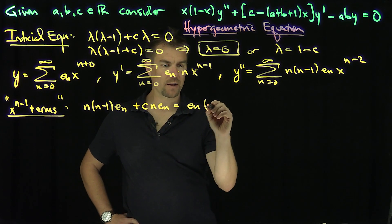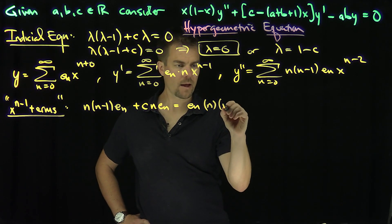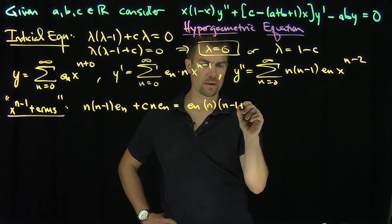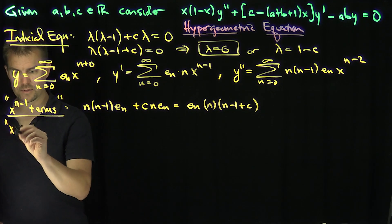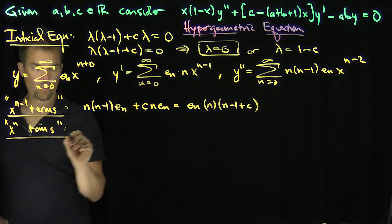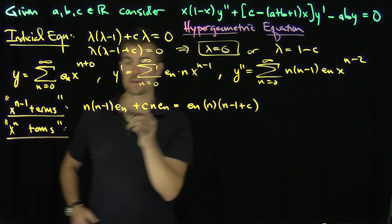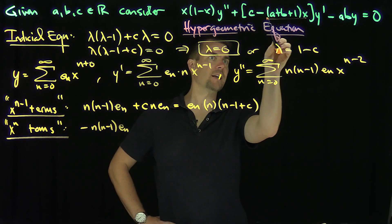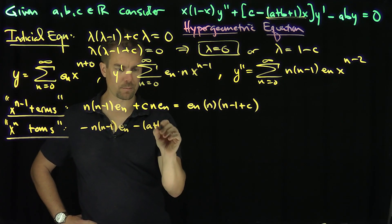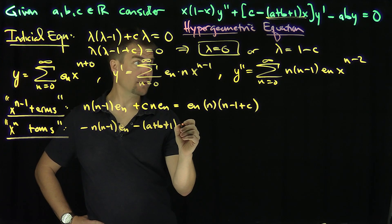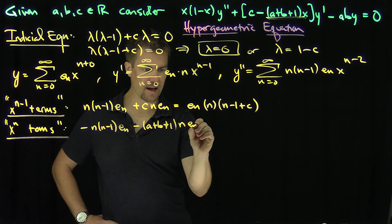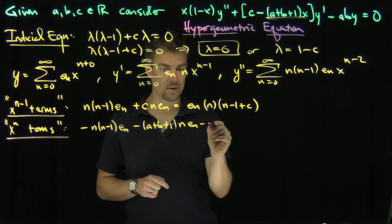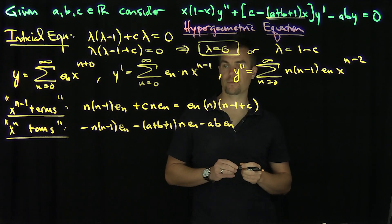For the x^n terms: from the negative x squared y double prime we get negative n(n-1) e_n; from the negative (a plus b plus 1)x y prime term we get negative (a plus b plus 1) n e_n; and from the negative ab y term we get negative ab e_n. Factoring these together, we get negative e_n times [n squared minus (a plus b plus 1)n plus ab], and the negative n terms cancel to give us negative e_n times (n plus a)(n plus b).